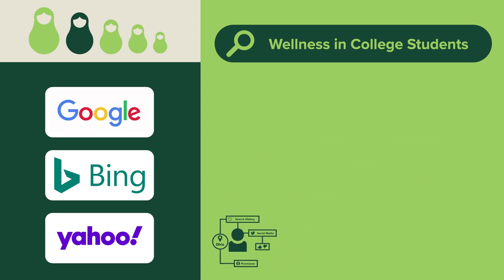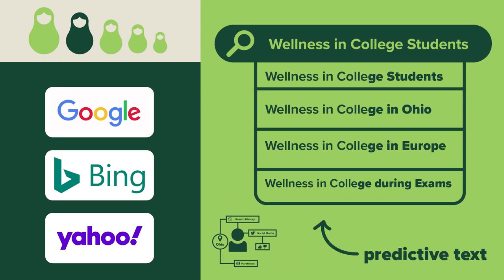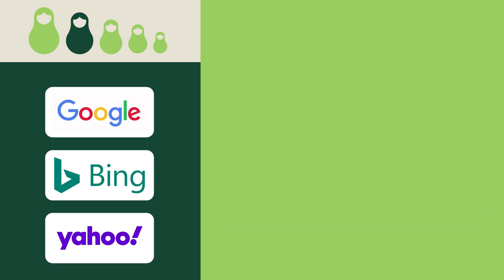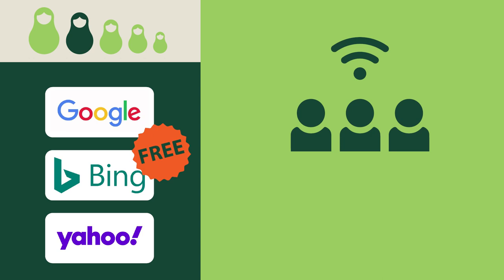Google and Bing use algorithms to predict relevant results. These search engines are free to anyone who has Internet access, but there are no quality standards or structures to help you search.